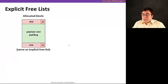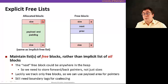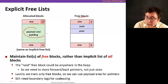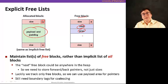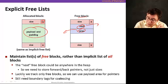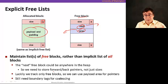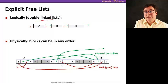Instead of just having the size and an allocated bit like in an implicit free list, since free blocks do not have payload and padding, we're going to put pointers there — one that points to the next free block, and one that points to the previous one. We're still going to need boundary tags for coalescing. Logically, it's a doubly linked list with pointers to the previous and next blocks.